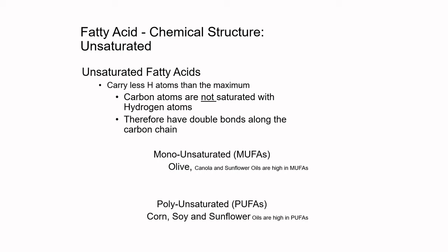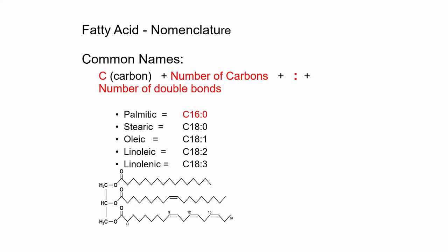Then we've got unsaturated fatty acids, where we've got fewer hydrogen atoms than the maximum, and in many cases we've got those double bonds — just one of them in the case of monounsaturated fatty acids. Olive, canola, and sunflower oils are high in monounsaturated fatty acids. Then we've got polyunsaturated fatty acids where we've got multiple double bonds — two, three, sometimes more — within that fatty acid chain. Sometimes you can have four, five, or six of them.